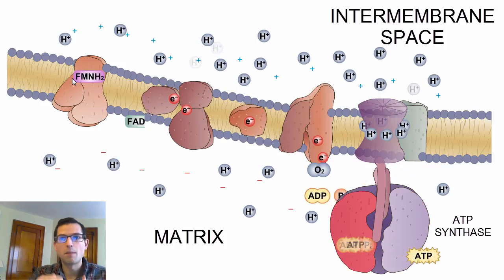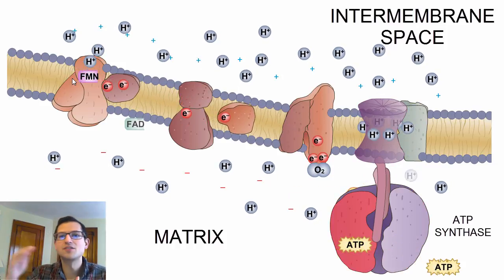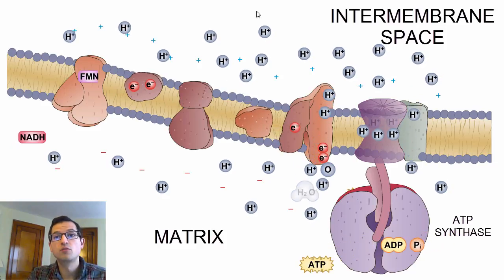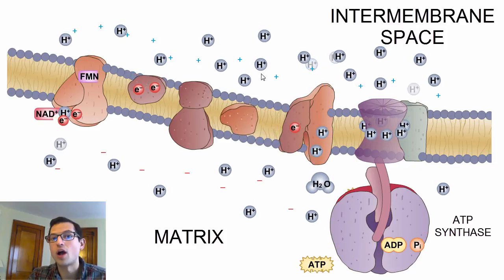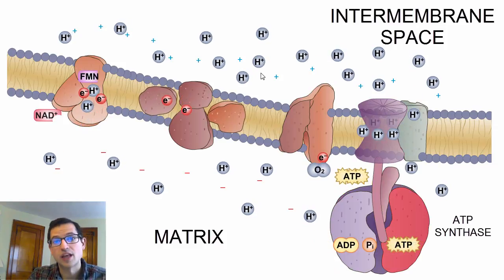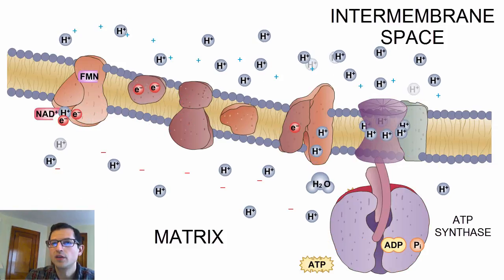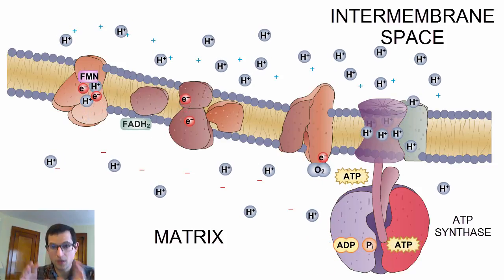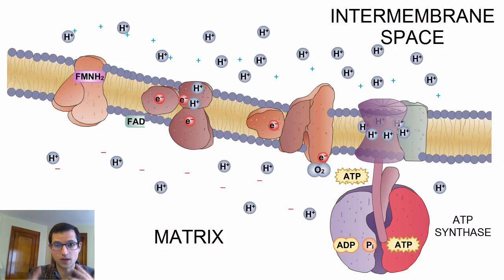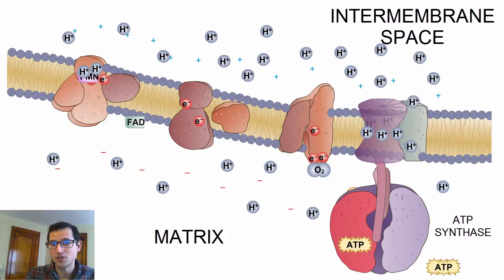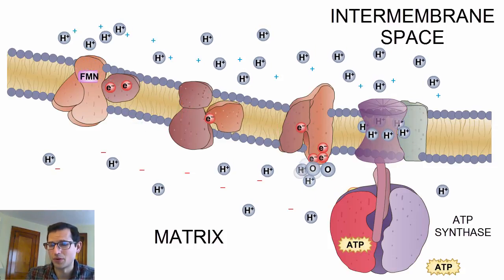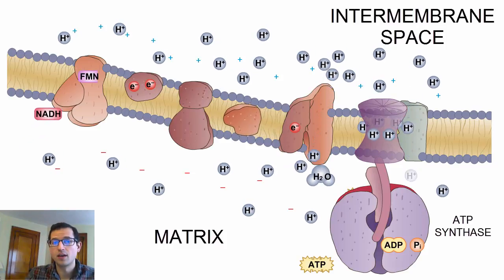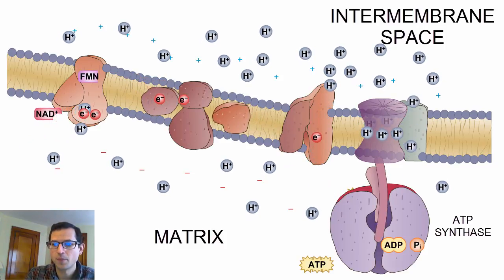So we've answered one half of the question, which is how do you make this proton gradient? You have proton pumps in the inner mitochondrial membrane that pump protons from the matrix to the intermembrane space. But we're not quite done, because pumping those protons against a concentration gradient — from a region where the concentration is low to a region where the concentration is high — requires energy. Now the question is, where does that energy come from? I think it's helpful to move from this animation to a static representation — it's just a little simpler. We'll go to the static representation, then come back.